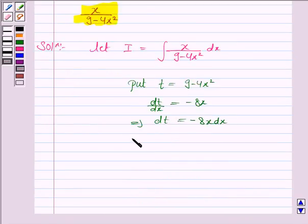And this implies x dx is equal to minus dt upon 8.